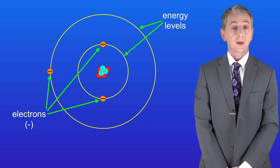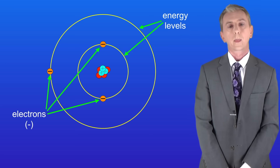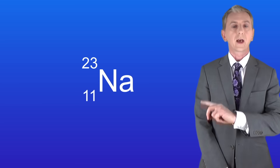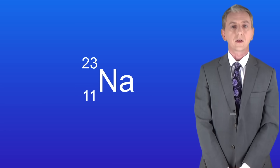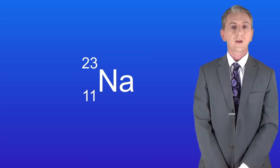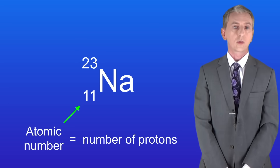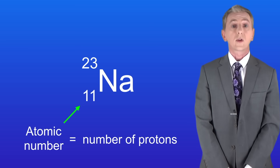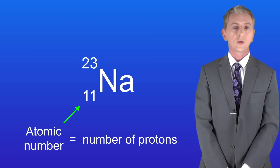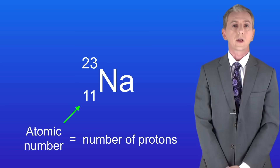Now every element has a symbol and these always have two numbers. I'm showing you here the symbol for the element sodium. You can see that we've got a large number — in this case 23 — and a smaller number — in this case 11. The smaller number is called the atomic number and this tells us the number of protons. So a sodium atom has 11 protons in its nucleus. It's really important to understand that all atoms of sodium have 11 protons. If an atom doesn't have 11 protons then it's not sodium.